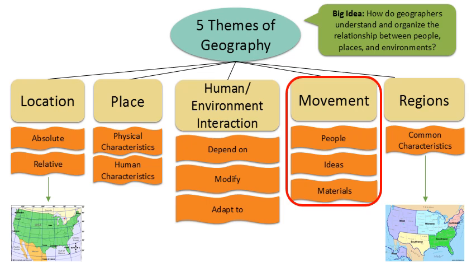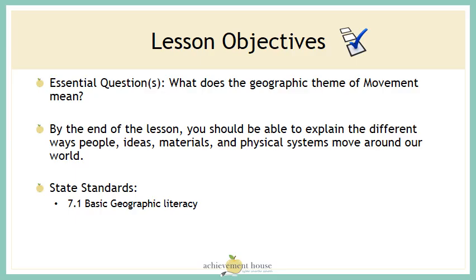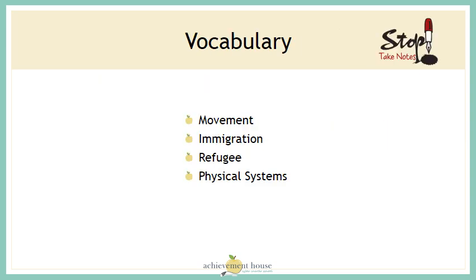This theme will deal with the movement of people, ideas, and materials around our globe. Our essential question today is: what does the geographic theme of movement mean? By the end of this lesson, you should be able to explain the different ways people, ideas, materials, and physical systems move around our world. Grab your notebook and jot down these words and look for their definition as you watch the video: movement, immigration, refugee, and physical systems.